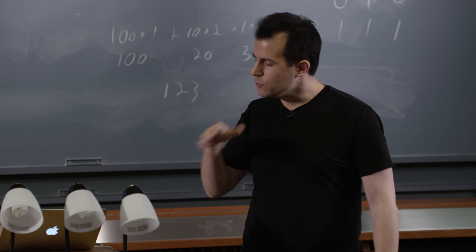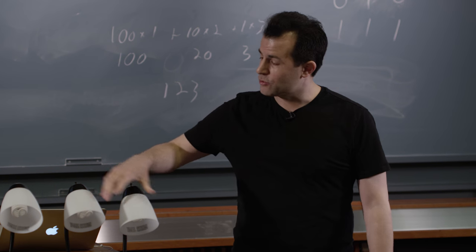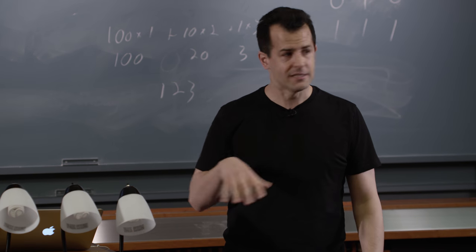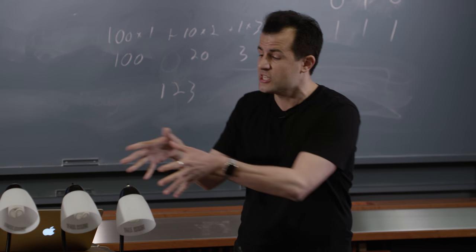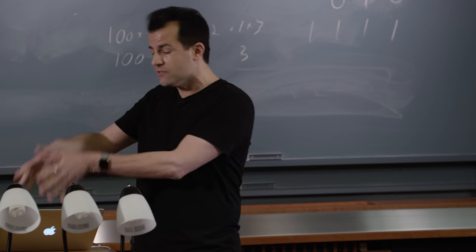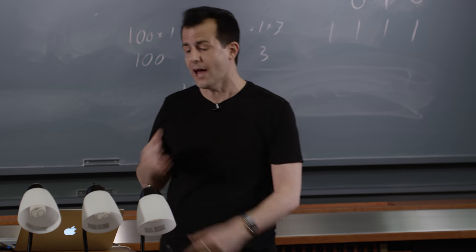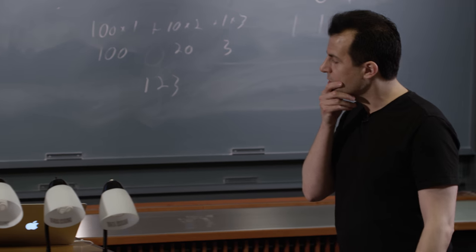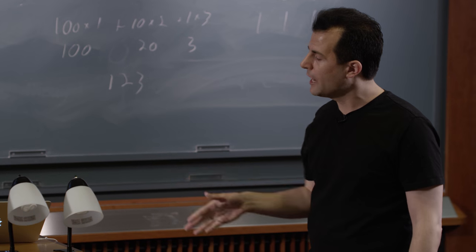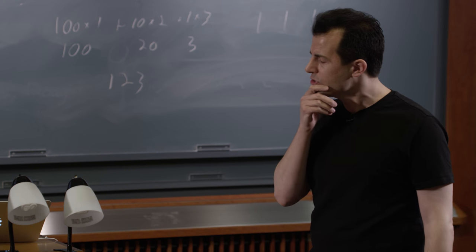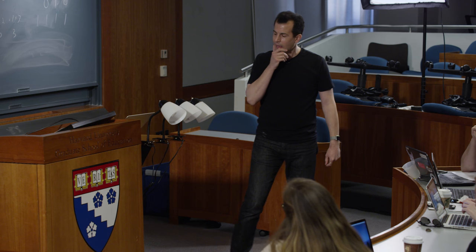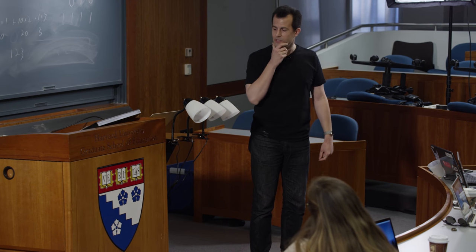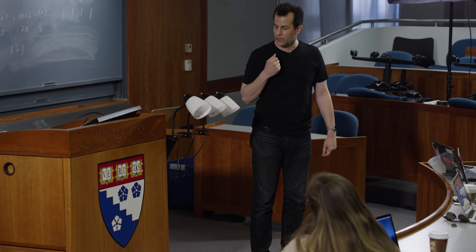So if you think of these three desk lamps as really big transistors — really big switches — and there just happen to be millions of them inside of my laptop, we can do the same thing. If a computer has three transistors inside of it, how would it represent a one? Which of these lights needs to be turned on?